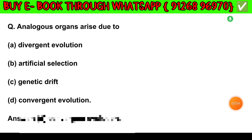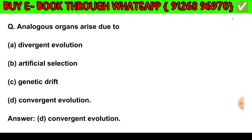Question number 3. Analogous organs arise due to: Option A — Divergent evolution. Option B — Artificial selection. Option C — Genetic drift. Option D — Convergent evolution. The answer is Option D: Convergent evolution.